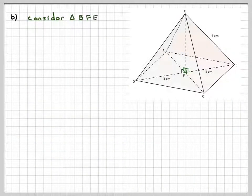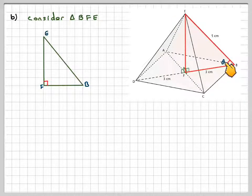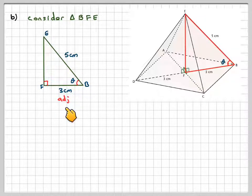Considering the same triangle we just did, the angle that we want to find is this one here. Again drawing it out, using 3 and 5. It's better to use the information we were given in the question. This is adjacent because it's next to the angle and this is the hypotenuse because it's on the longest side of the right angle triangle.